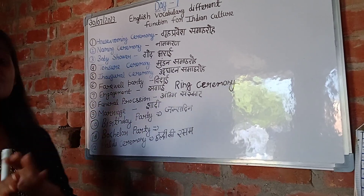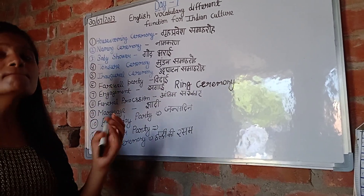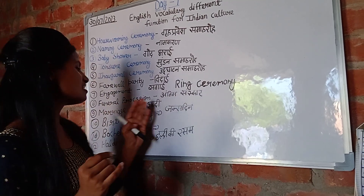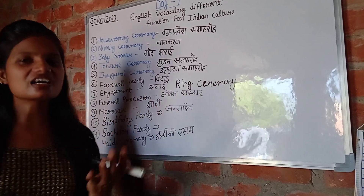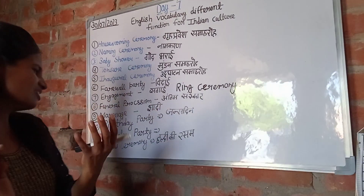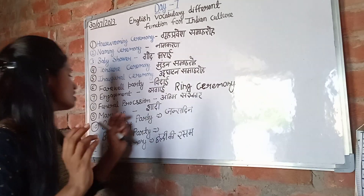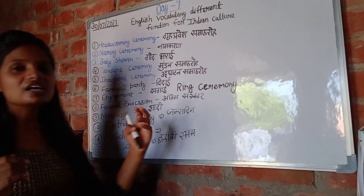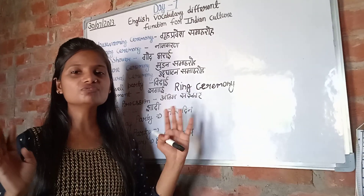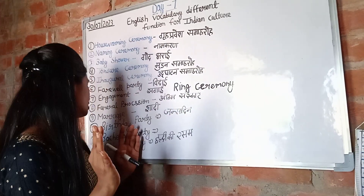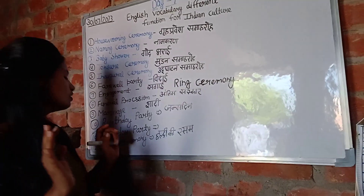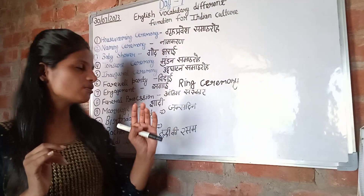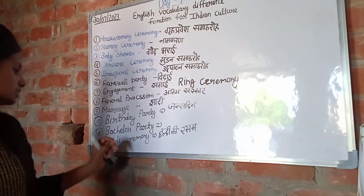Then we have marriage. Everybody likes marriage. Marriage is what we call shaadi — it is a common word everybody knows. Then we have a birthday party. For janam din we call it birthday party. Then we have a bachelor party — I think everybody knows about bachelor party.